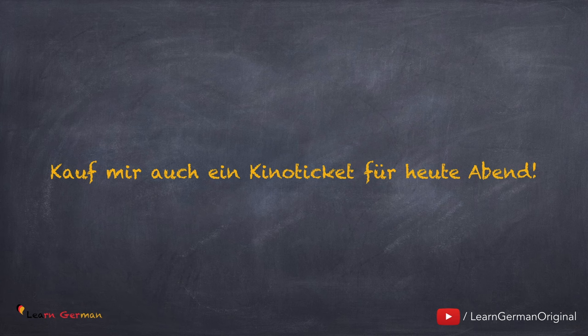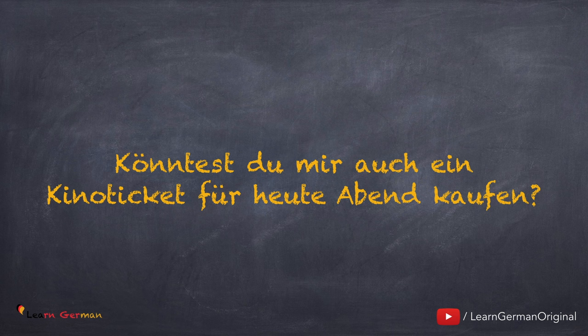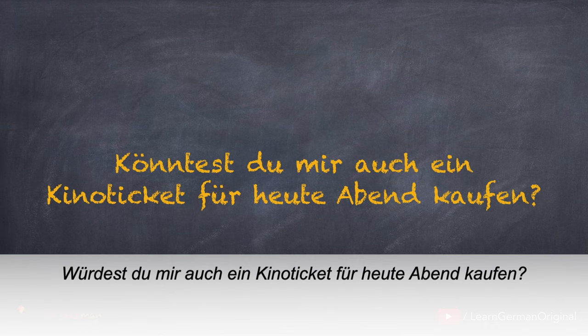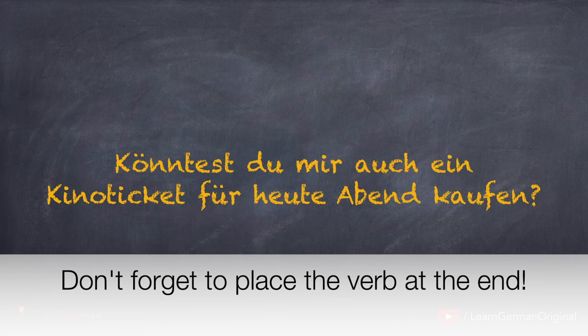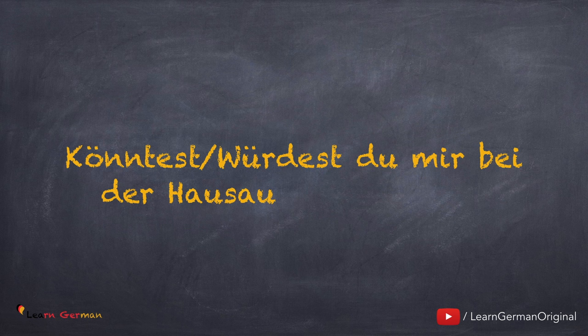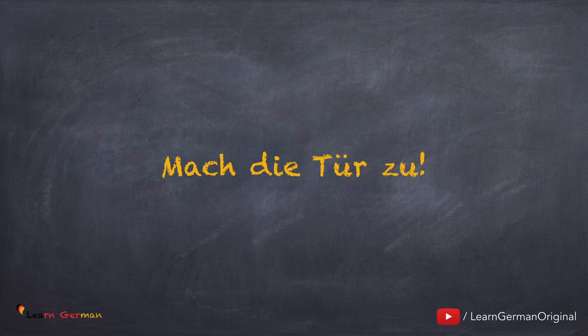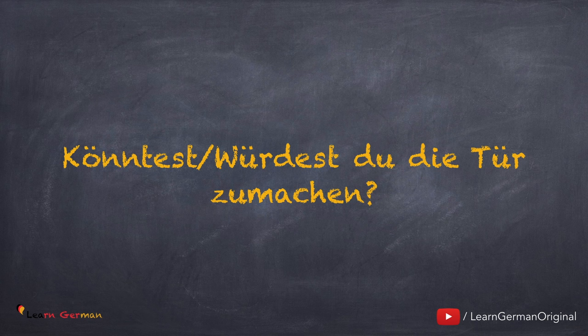Hier ist der nächste Satz: Kauf mir auch ein Kinoticket für heute Abend. Und die Antwort ist: Könntest du mir auch ein Kinoticket für heute Abend kaufen? Oder: Würdest du mir auch ein Kinoticket für heute Abend kaufen? Bitte nicht vergessen, dass das Verb am Ende steht. Der nächste Imperativsatz ist: Hilf mir bei der Hausaufgabe. Und höflich kann man ihn so formulieren: Könntest du mir bei der Hausaufgabe helfen? Oder: Würdest du mir bei der Hausaufgabe helfen? Hier ist noch ein Satz: Mach die Tür zu. Und höflich sagt man: Könntest du die Tür zumachen? Oder: Würdest du die Tür zumachen?